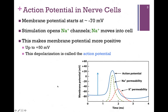Starting at minus 70 millivolts, there is an initial stimulation that opens sodium channels — all we've done is open the door. Because the sodium concentration is higher outside the cell, it moves spontaneously inside the cell. The negative millivolts means the membrane potential is more negative inside the cell, but now we're moving positive charges inside the cell, and that's going to make the membrane potential more positive, up to 50 millivolts.